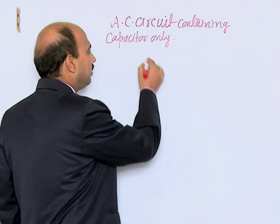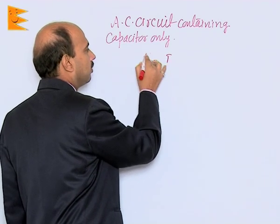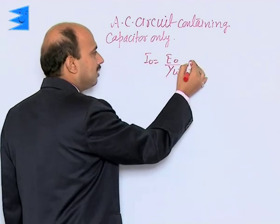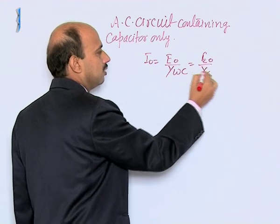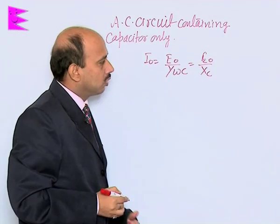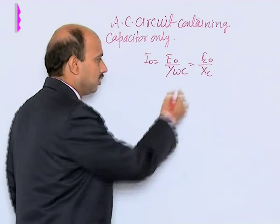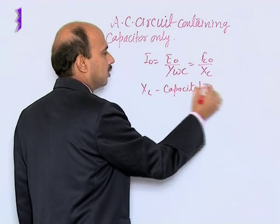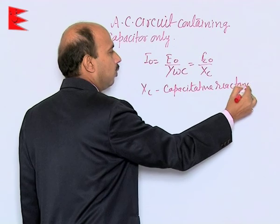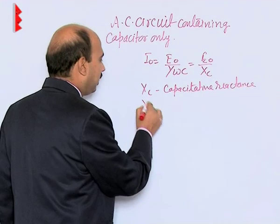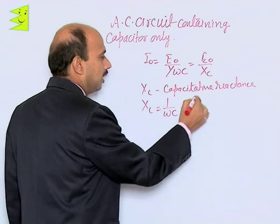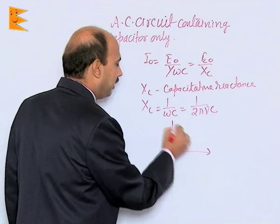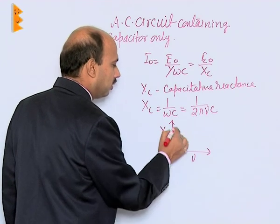We have seen that I₀ = E₀ / (1/ωC). Here 1/ωC is the resistance offered by the capacitor, called capacitive reactance, denoted Xc. Its unit is ohm. Xc = 1/ωC = 1/(2πνC). The graph between Xc and ν shows a hyperbolic decrease as frequency increases.